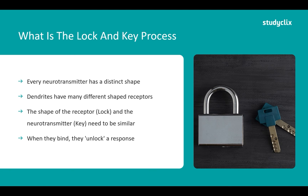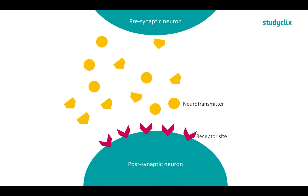This will make more sense when I go through this diagram here. Looking at the top we can see the pre-synaptic neuron. This here would be considered our synaptic gap and then down here we have the post-synaptic neuron. We have two different shapes of neurotransmitters — the circle and the pentagon — and then we have our receptor sites.